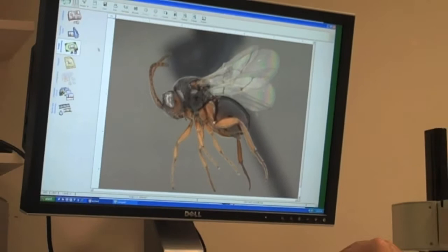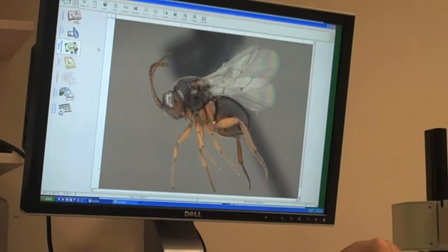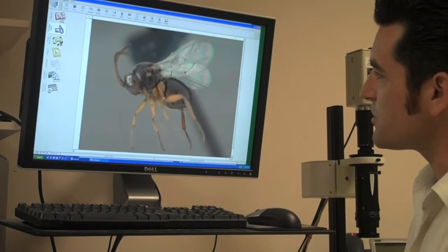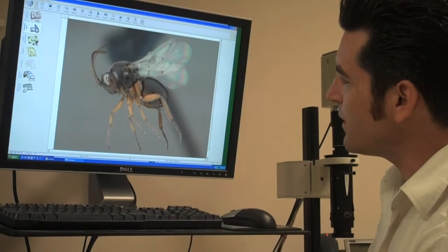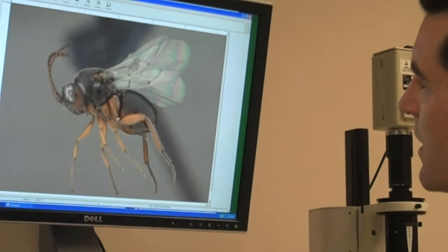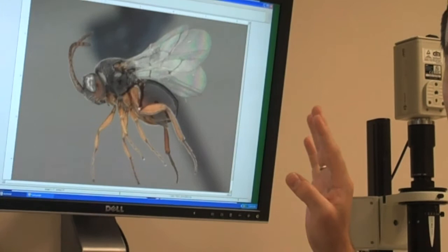Now if we look at the original image, this is a real-time video right now of the specimen. And I'm going to focus through it. I hope the camera can pick this up. But you can see as I focus through this, I can't get the whole wasp in focus at the same time. But my composite image does get it in focus all at the same time. This has been a revolution in how we photograph insects and how to use those photographs for scientific illustration.